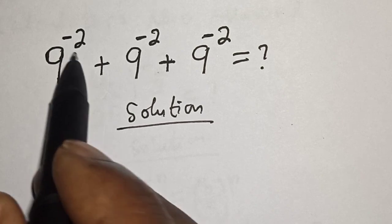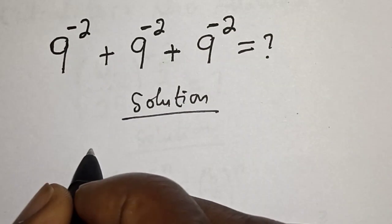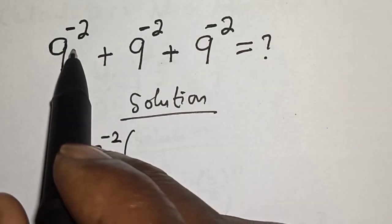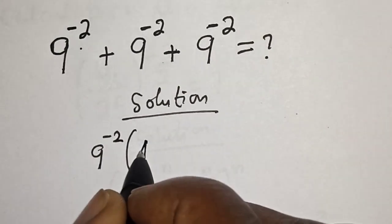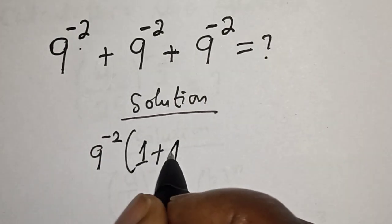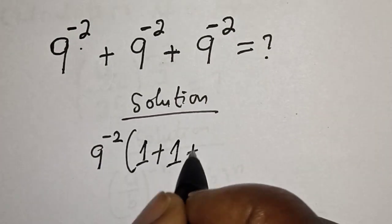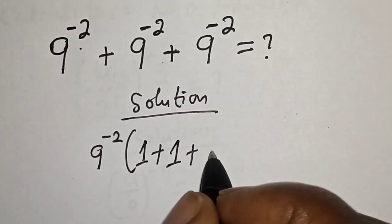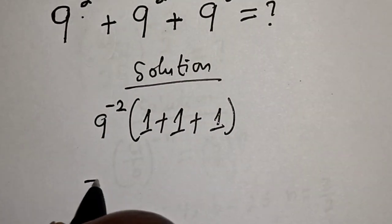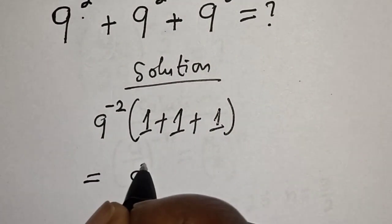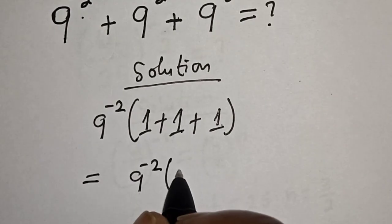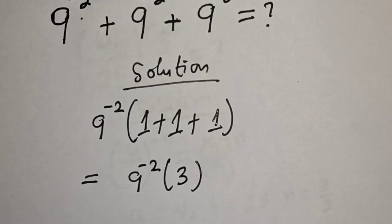For the solution, we have 9 raised to power minus 2, which is very common — let's bring it out. So we have 9 raised to power minus 2, in brackets, multiplied by: 1 plus 1 plus 1. This gives us 9 raised to power minus 2 multiplied by 3.